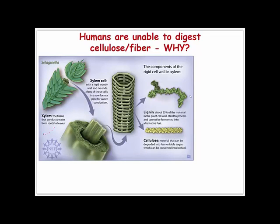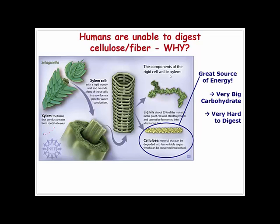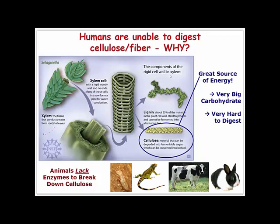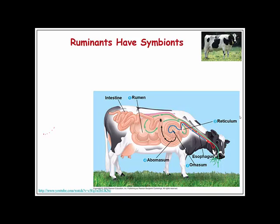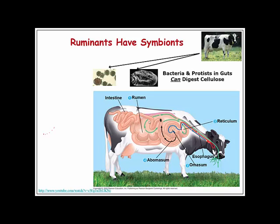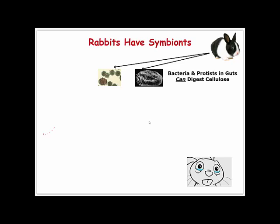There are certain things we can't digest, like cellulose — a fiber — because we don't have the enzymes for it. However, animals like ants and rabbits eat a lot of cellulosic material and seem able to digest it. The cow, a ruminant with a multi-chambered stomach, physically breaks down food so that bacteria and protists can digest the cellulose; the cow then chews and eats those organisms.